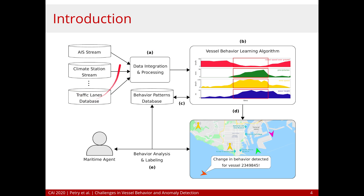Data from different sources, including AIS of course, are collected, integrated, and processed so that a learning algorithm can learn about different vessel behaviors and store them in a database, and also present them to the user, which is the maritime agent. The agent can analyze these behaviors and also add knowledge in the form of labels, for instance, which are also stored in the database.